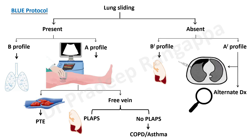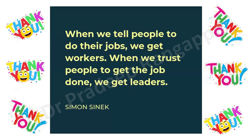Even if you don't remember the full protocol, just remember: first look for A-profile, then lung sliding, then B-lines, then go to FLAPS to look for consolidation. That pretty much summarizes the whole lung ultrasound assessment. All the other utility of bedside ultrasound in the ICU — including procedure videos — are covered in individual videos available on my YouTube channel and website.